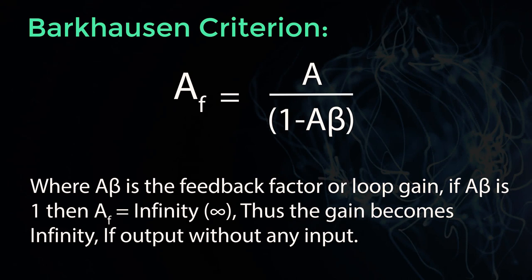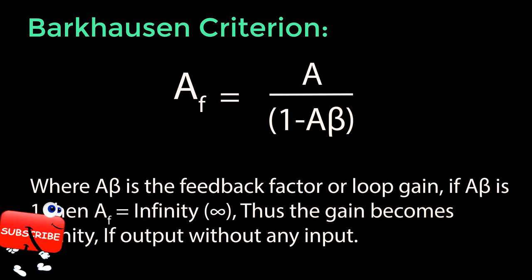A beta is the feedback factor or loop gain. If A beta is 1, then Af is equal to infinity.